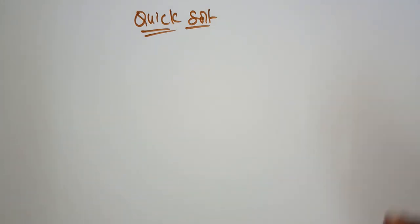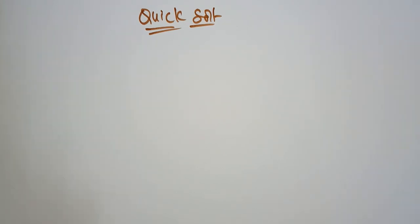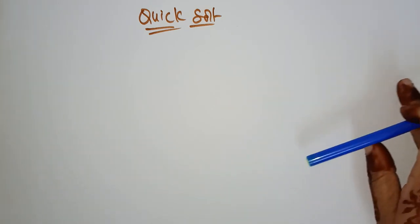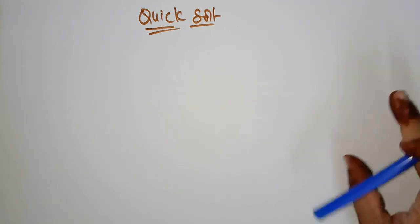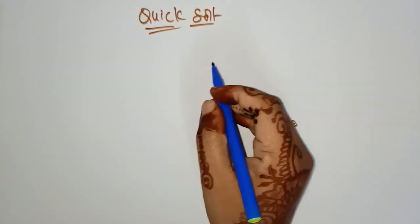Hi students, welcome back. Let's continue with the quicksort algorithm. In the previous video I explained the algorithm. Now let's see the example of quicksort by using the divide and conquer method. The array we are taking is going to be divided, you sort each subarray, and after that you merge them.